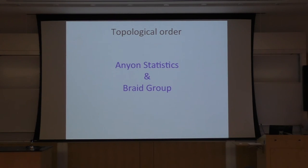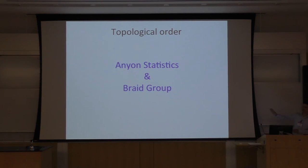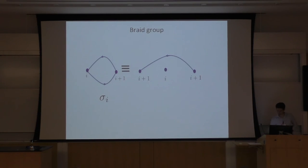I can show that if I take three particles and exchange one and two first, then two and three, and later three and one, the final answer should equal the result from doing the sequence in the other order — because the final configuration is the same. With these two relations, I can define a well-defined group called the Artin braid group, and I can study representations of that group.